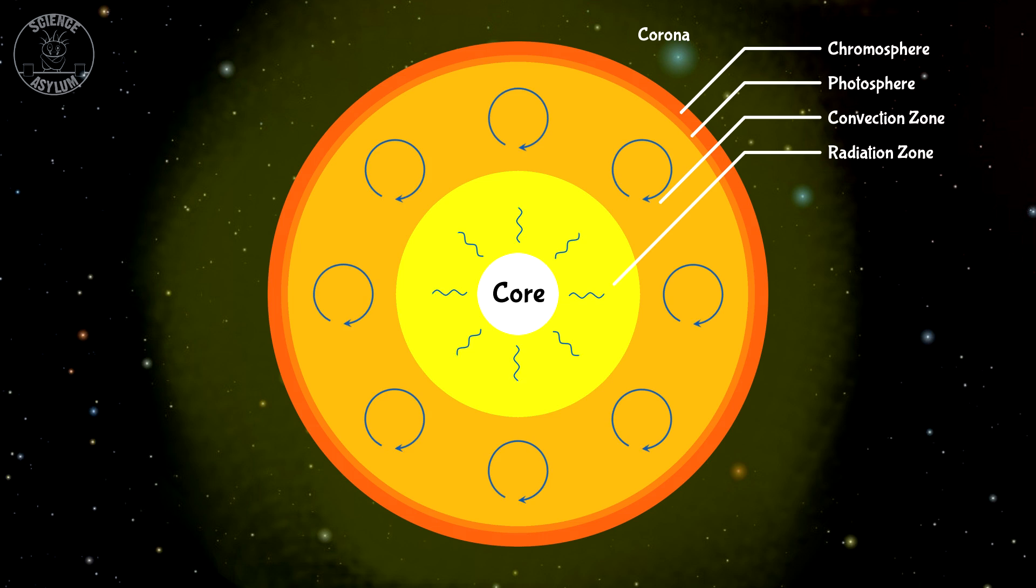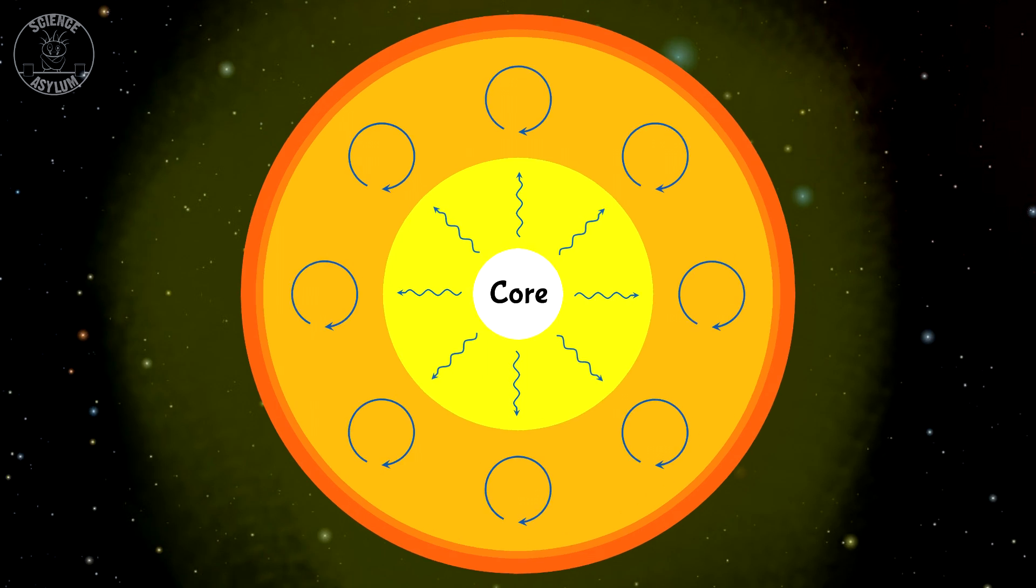You've got normal star stuff happening in the outer layers, like the chromosphere giving the star its reddish-orange color, and convection currents carrying heat and light from the core to its surface. The core is what's going to turn into the black hole, so let's zoom in a little.